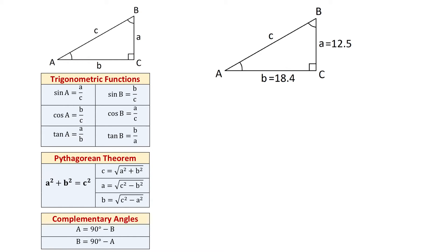If working with angle B, then sine of this angle is the opposite side B divided by hypotenuse C. Cosine of angle B is the adjacent side A divided by hypotenuse C. And tangent of angle B equals the opposite side B divided by the adjacent side A.